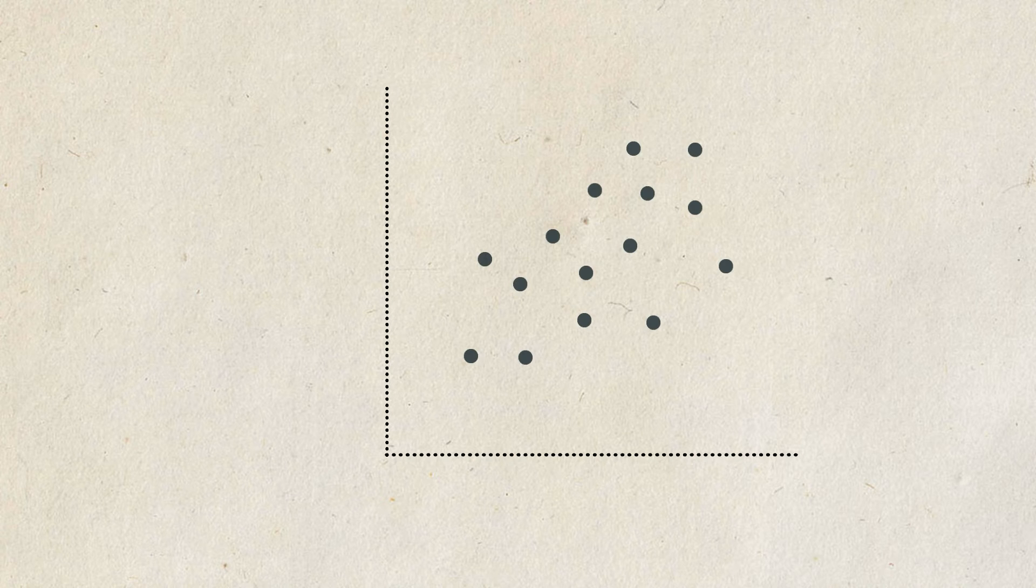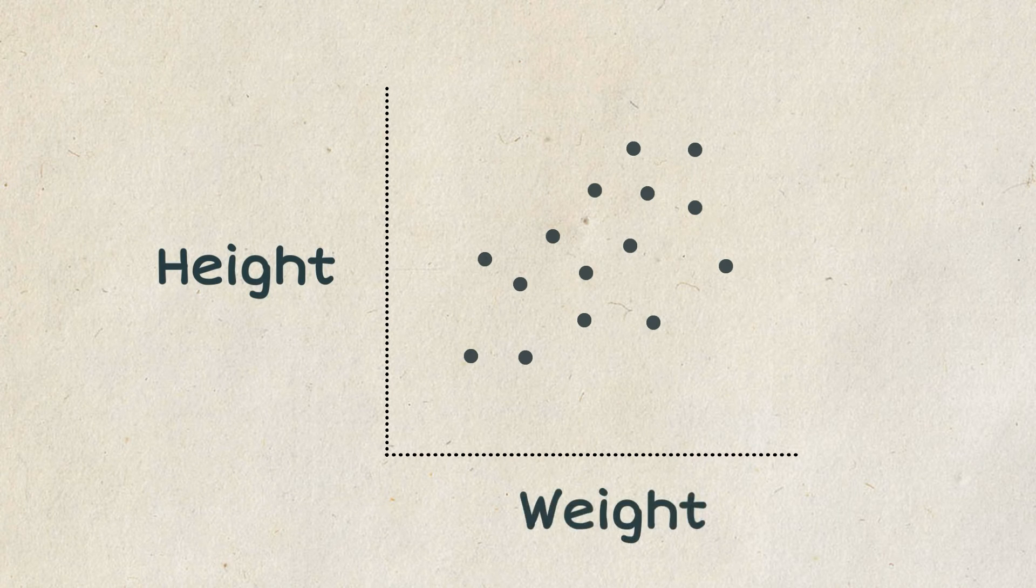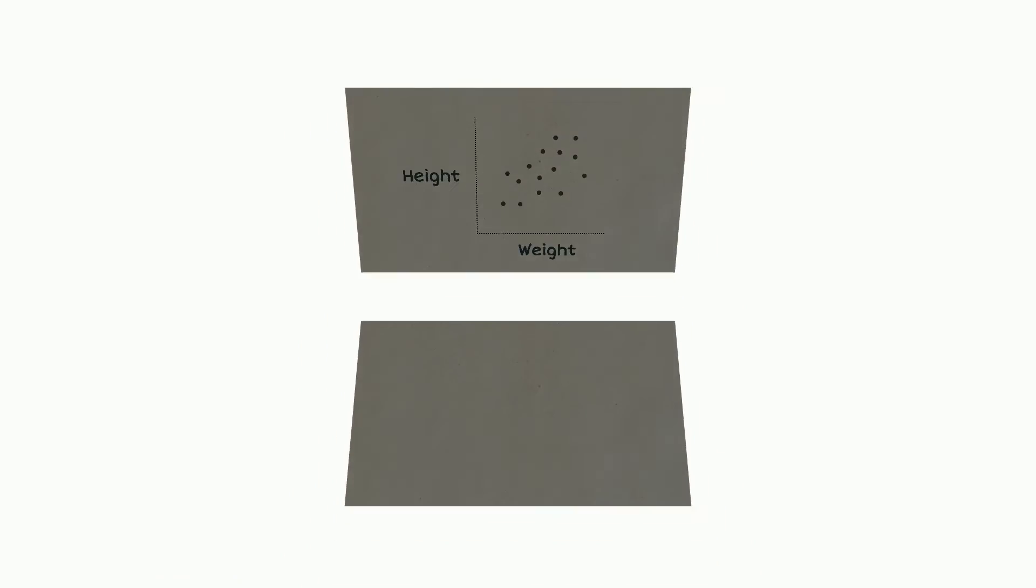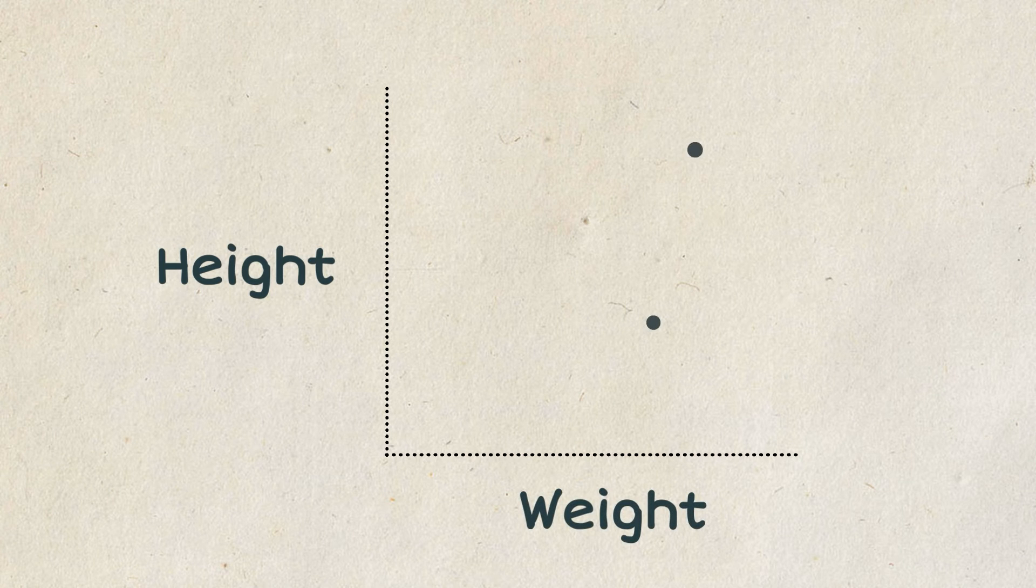One very good example of a type of data that uses a scatter plot is height and weight of a person. For example, you surveyed a group of people and asked them their heights and weights. As you plot the values in the graph, it will show you how distributed your data points are.